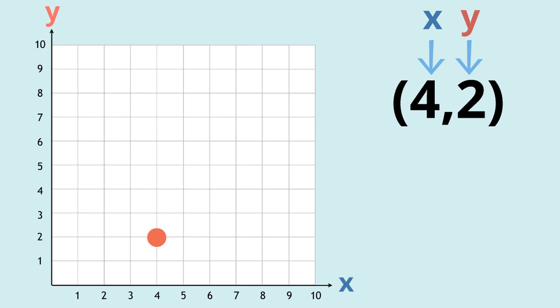Bracket, then the x number, then the comma, followed by the y number, close the bracket. When we're using coordinates we always use the number on the x-axis first and then the y-axis. You can't swap them around or else you get a totally different point.